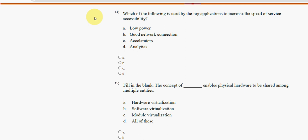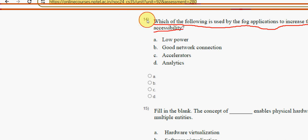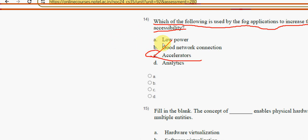Fourteenth question: which of the following is used by fog applications to increase the speed of service accessibility? The probable answer is option C — accelerators. Mark option C as the correct answer.